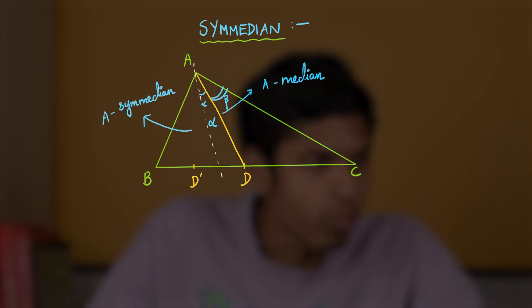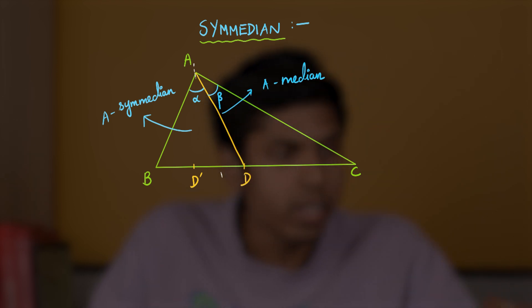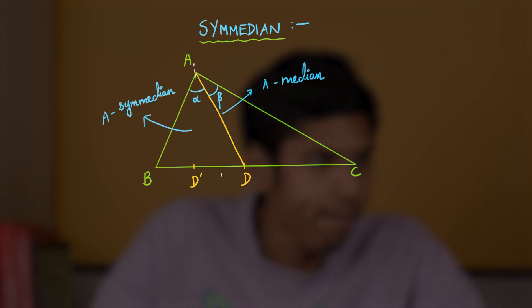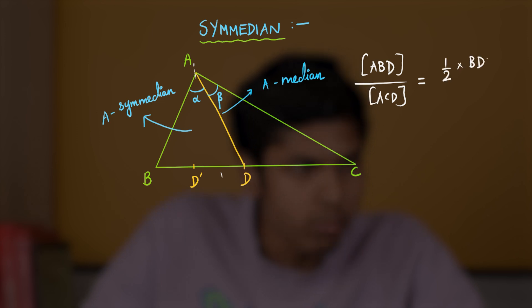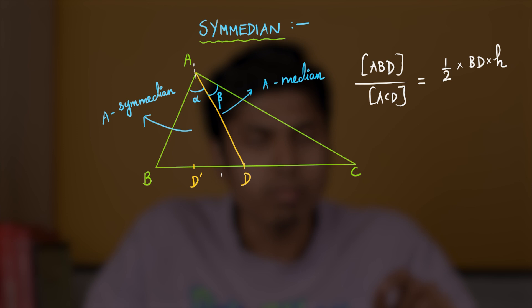Alright, but what are the properties of the angle alpha and beta? So, let's take a look. Suppose, say this is alpha and beta, the angle subtended by A-median with the sides. Now, notice that area of ABD by area of ACD is equal to half into base BD times the height of the triangle from A.